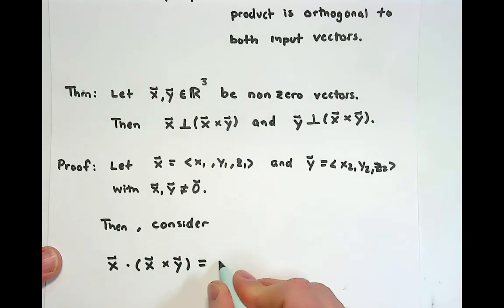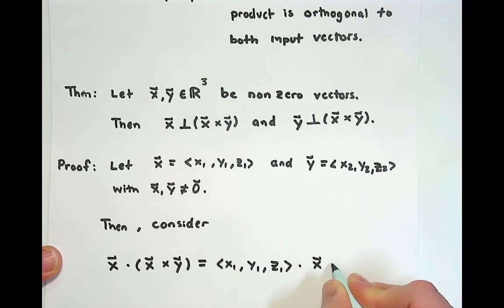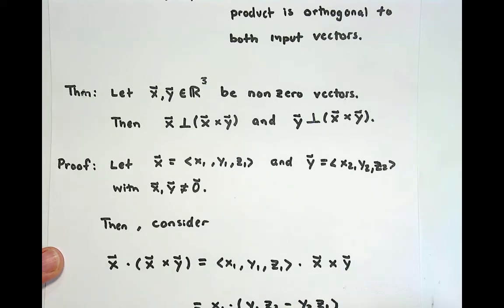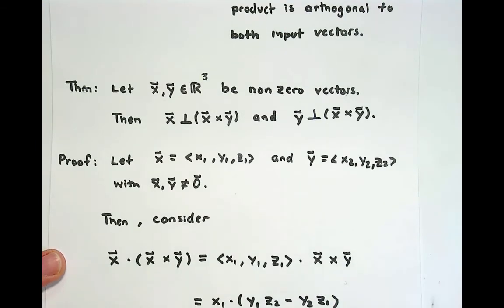This would be x₁, y₁, z₁, and I'm going to dot that with x cross y. The first component of the cross product would be y₁z₂ minus y₂z₁. In the dot product, I add the individual components.